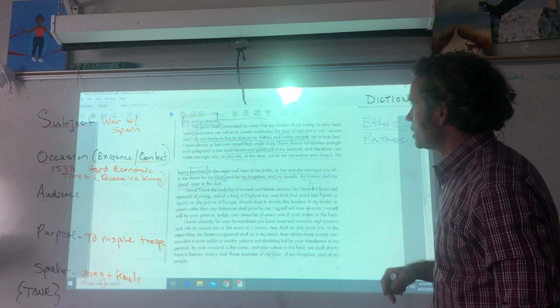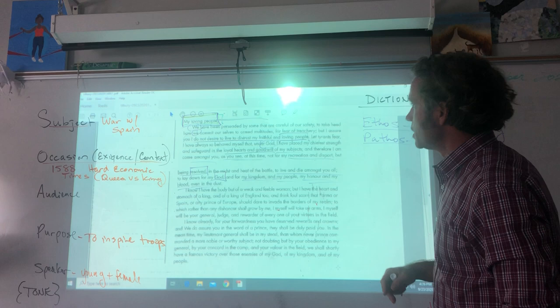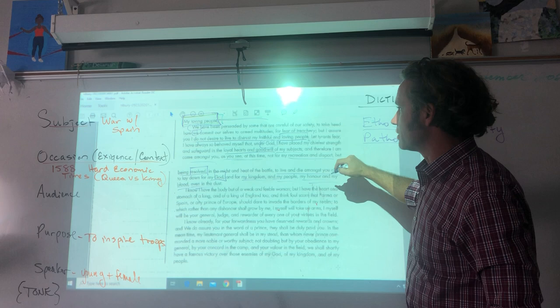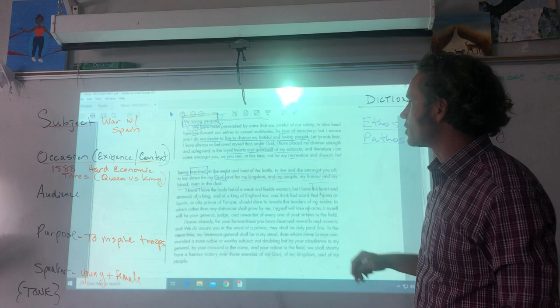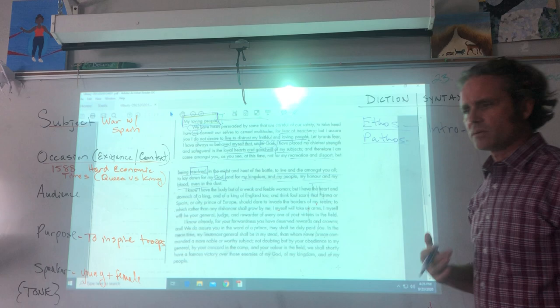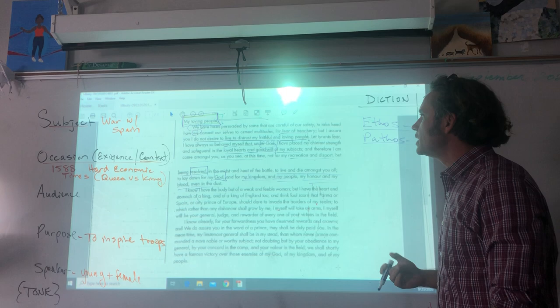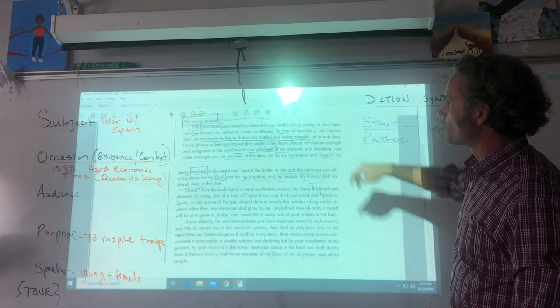She shifts from 'we' to 'I'—she uses first person plural 'we, us, our' and then 'my kingdom' to remind us that she is in charge. Her resolve is also a good word to let us know she is determined. 'Let tyrants fear, I have always behaved myself that under God I have placed my chiefest strength and safeguard in the loyal hearts and goodwill'—she is earning the respect. All of this word choice could be used to establish her credibility or the emotional content.